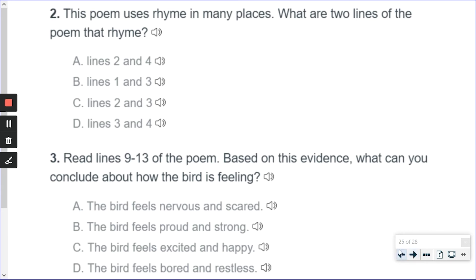Now, question number three. Lines nine through 13 of the poem. Read that. Based on this evidence, what could you conclude about what the bird is feeling? Now, go back to the poem. You're looking for lines nine through 13.